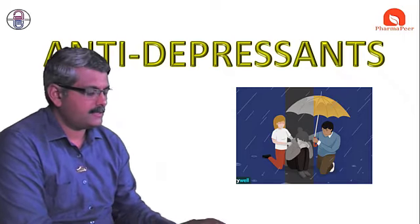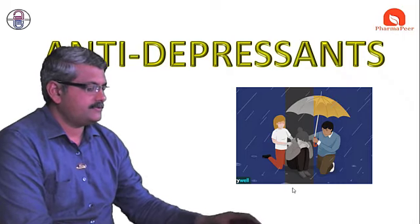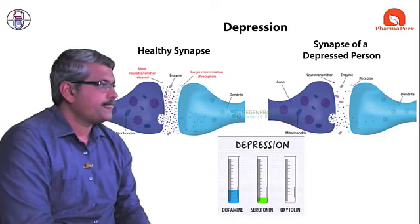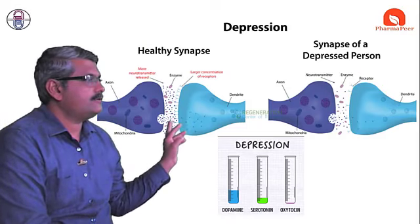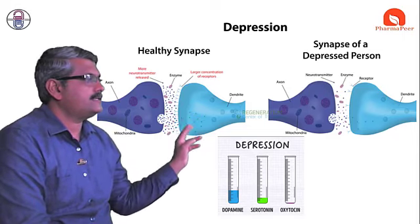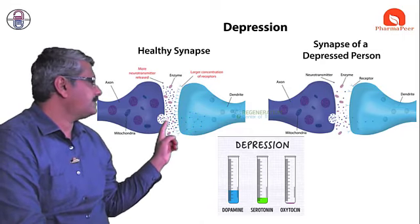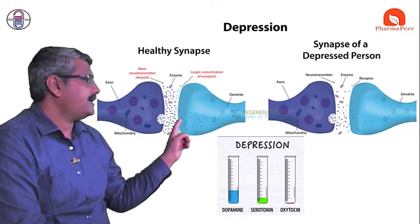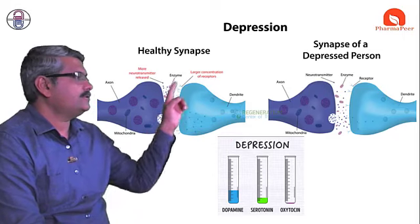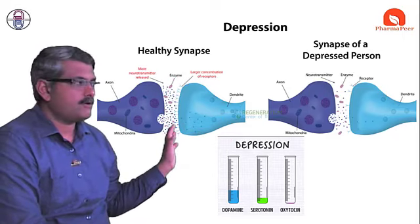Before starting, let's revise the physiology of depression. In healthy synapses, vesicles release neurotransmitters in quite sufficient quantity. These neurotransmitters bind with receptors and produce their action normally, even though some metabolic enzymes are present.